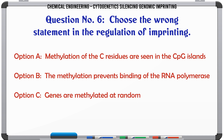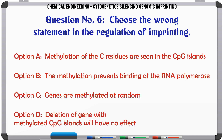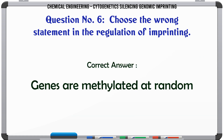Choose the wrong statement in the regulation of imprinting. A. Methylation of the C residues is seen in the CpG islands. B. The methylation prevents binding of the RNA polymerase. C. Genes are methylated at random. D. Deletion of a gene with methylated CpG islands will have no effect. The correct answer is C: Genes are methylated at random.